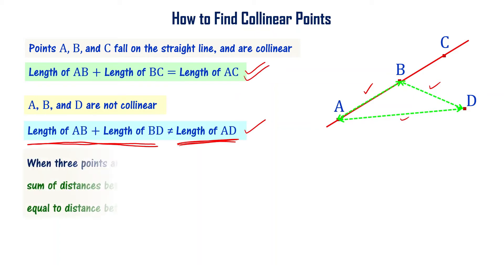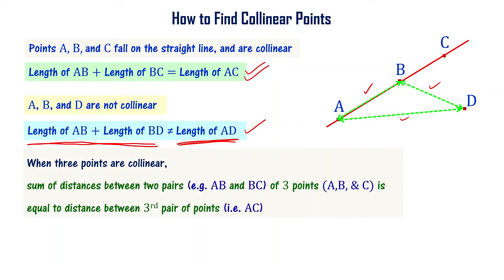When three points are collinear, the sum of the distances between two pairs of the three points is equal to the distance between the third pair of the points.